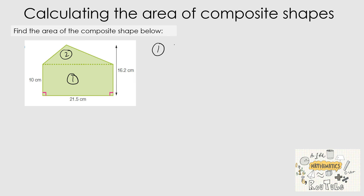For shape 1, the rectangle: the formula is length times width. Labeling length and width accordingly, we multiply 21.5 by 10, which gives us 215 centimeters squared. That is the area of the rectangle.